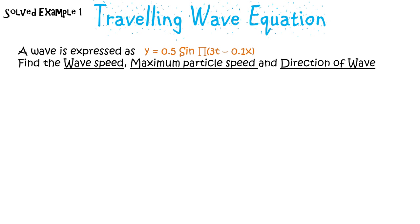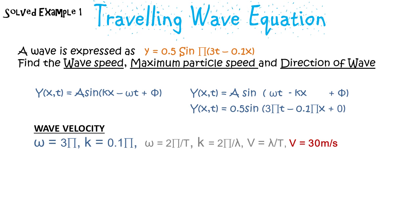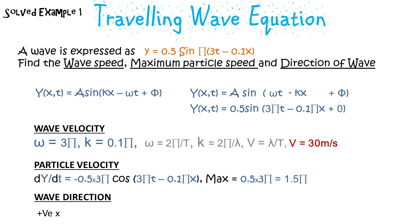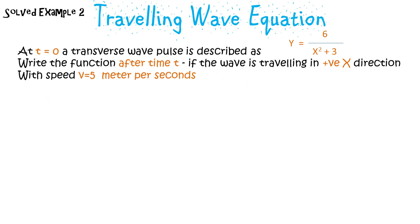I will now solve Example 1. Notice that the wave velocity is different from particle velocity, and the formula used is omega t minus kx, so the wave is moving in the positive x direction. At t equal to zero, the wave equation is given as 6 divided by (x squared plus 3), and we have to find the equation after time t given that the velocity is 5 meters per second.